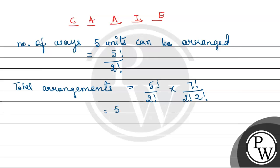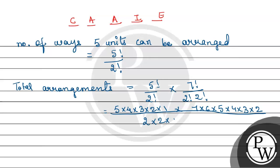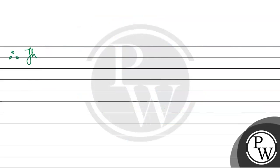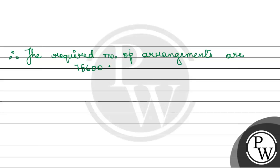Now solving: 5 × 4 × 3 × 2 × 1 multiplied by 7 × 6 × 5 × 4 × 3 × 2 × 1, all divided by 2 × 2 × 2, which equals 75,600. Therefore, the required number of arrangements where all consonants occur together is 75,600. I hope you have understood it well. Thank you and best of luck.